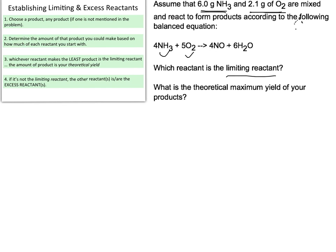The next thing we're supposed to do is determine the amount of that product we can make based on each of the reactants we start with. We've been given 6.0 grams of NH3 and 2.1 grams of O2 — two reactants. What we're going to solve for is moles of NO.